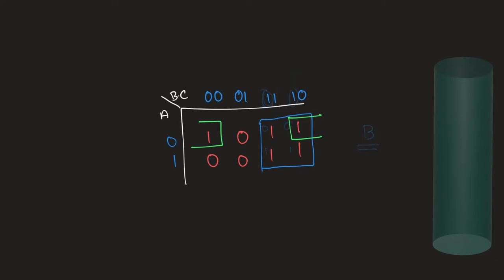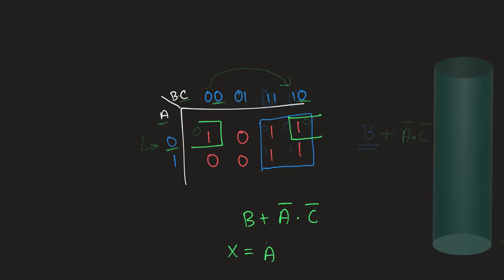For the green box: the value of A does not change — it stays 0. The value of B changes, going from 0 to 1, so we skip B. The value of C is constant at 0 in both cells. So for the green box we retain A and C, both at zero, giving us A-naught C-naught. Our final simplified expression is B + A-naught C-naught. You might traditionally write it starting with A as A-naught C-naught + B, but it doesn't really make a difference.